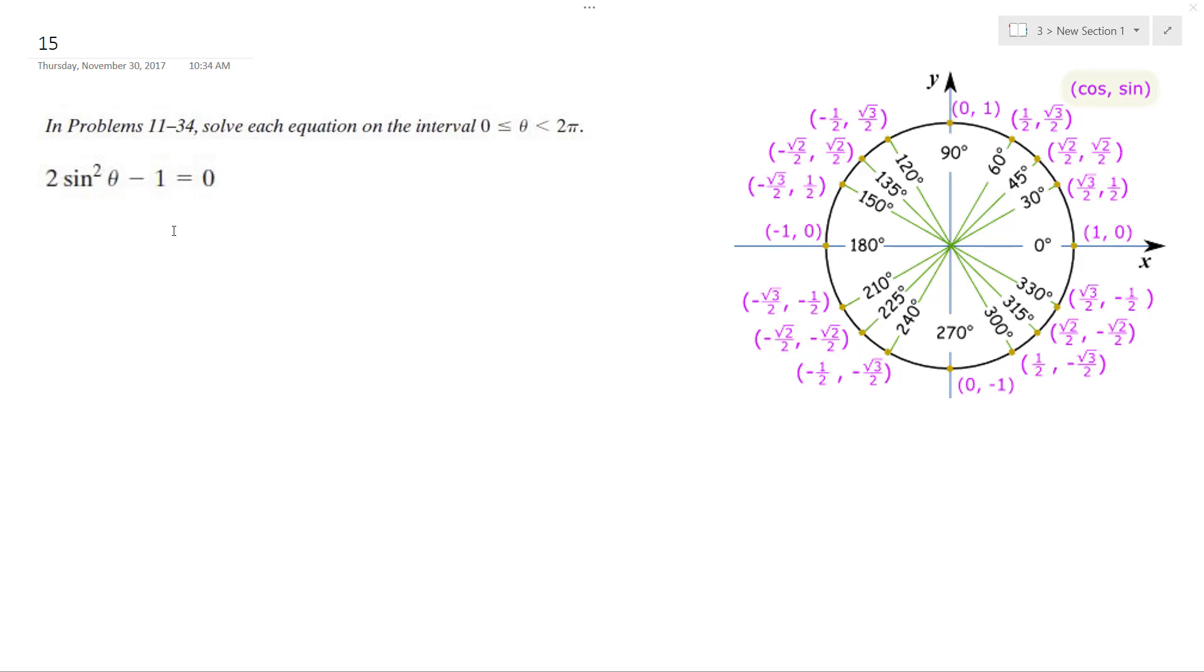All right, so solving this problem, I get 2 sine squared theta minus 1 equals 0. I just want to solve this for 0 to 2 pi, general sense.